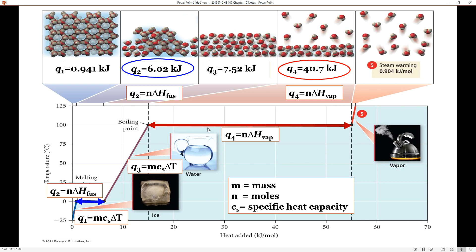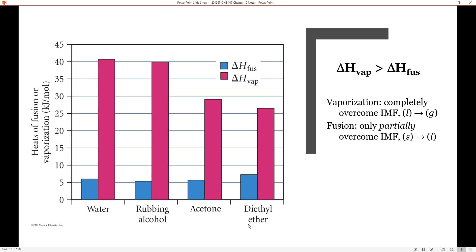Notice the size difference between the two enthalpy values. Why is the blue line for fusion so much shorter than the red line for boiling? Vaporization has to completely overcome the intermolecular forces to go from a liquid to a gas, so ΔH_vaporization (the pink bars) will always be larger regardless of the substance. For ΔH_fusion (the blue bars), we're only partially overcoming those intermolecular forces going from solid to liquid, so it's always much smaller.